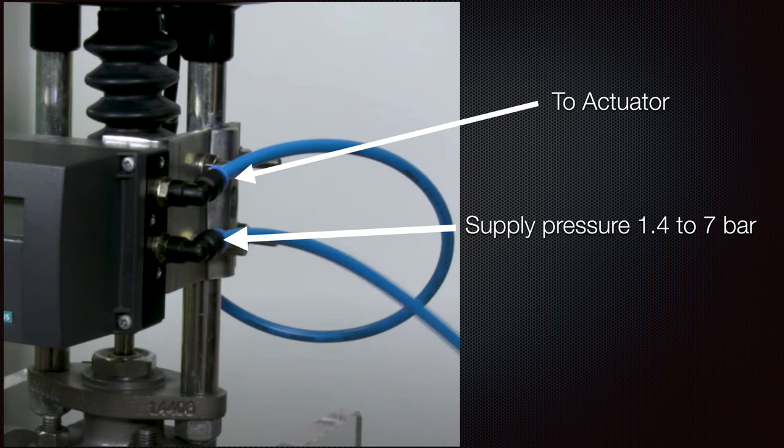The supply air pressure is from 1.4 to 7 bar. We have supply air going to the actuator, and from the actuator it will regulate the pressure supply to the valve.